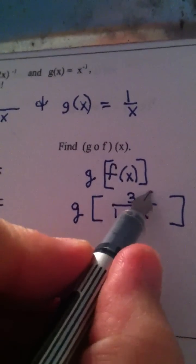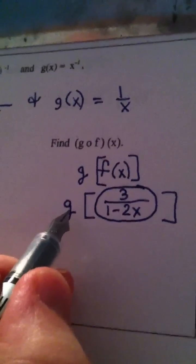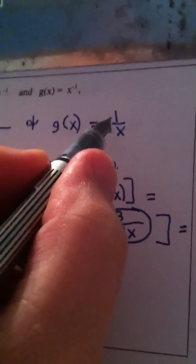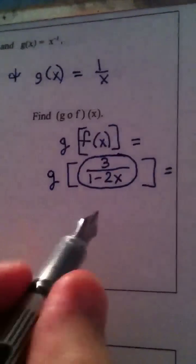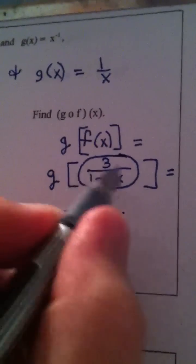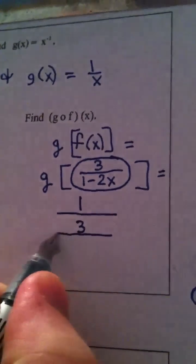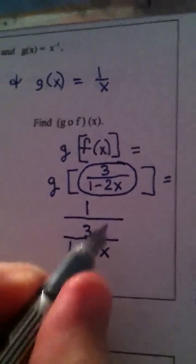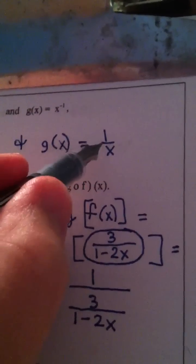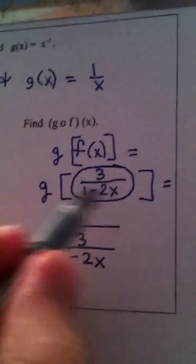So I take this quantity as one item, and I put it into g. Well, look what g does. g takes 1 divided by whatever I'm putting in. 1 divided by whatever I'm putting in, 1, and that would be 3 over 1 minus 2x. See how that helps? See what we did there. g is 1 divided by the input.